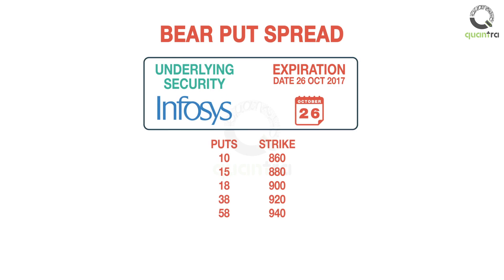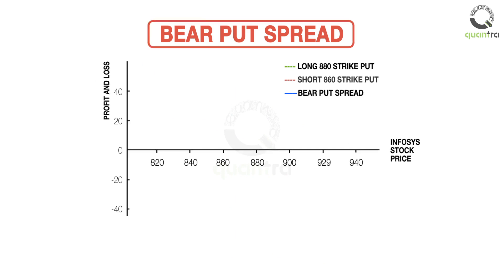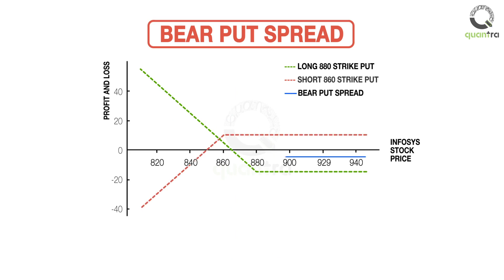There are two steps to set up a bear put strategy for the Infosys stock trading at Rs. 900. Step 1: long 880 strike put. Step 2: short 860 strike put. A combination of the payoffs of the long put with strike price 880 and the short put with strike price 860 is the payoff of a bear put spread, shown in blue.